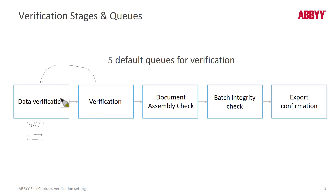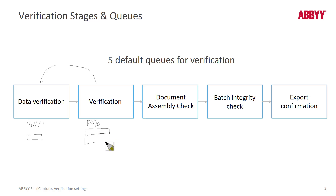Once that gets knocked out, a different employee — perhaps a knowledge worker, as opposed to a very fast data entry clerk — sees a batch where everything's at 100% in terms of low confidence characters. However, there still may be more complex rule violations to check and adjudicate. So this split verification process can be very effective in using people's time most efficiently.